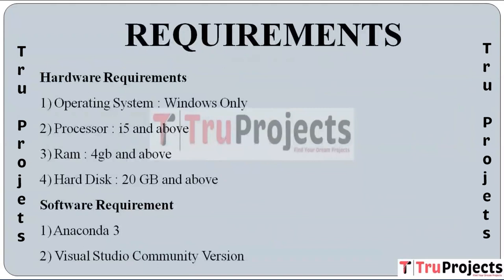Coming to the requirements part, there are two types: hardware requirements and software requirements. For hardware: the operating system is Windows, the processor is i5 and above, a minimum of 4 GB of RAM is required, and hard disk storage of 20 GB and above. For software: Anaconda 3 and Visual Studio Community Edition are required.